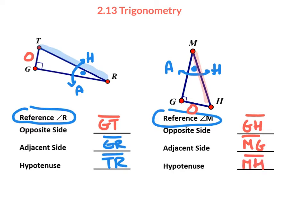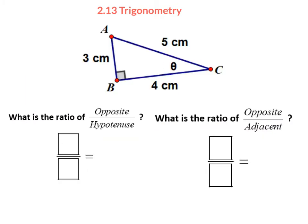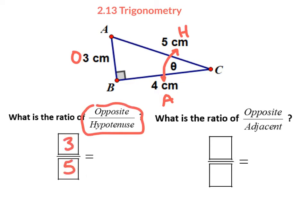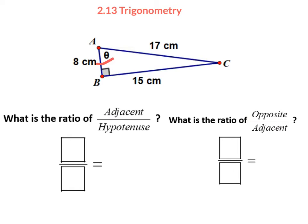The labeling is critical because we're going to create ratios using these names. For example, in a 3-4-5 right triangle with a given reference angle, H is 5, the adjacent is 4, and the opposite is 3. The ratio of opposite to hypotenuse is 3 to 5, and opposite to adjacent is 3 to 4. In another triangle, the arc always touches the adjacent and hypotenuse, not the opposite.